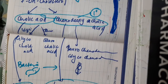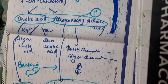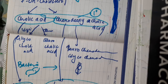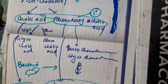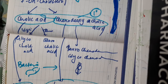Chenodeoxycholic acid combines with glycine to form glycochenodeoxycholic acid, whereas it combines with taurine to form taurochenodeoxycholic acid. So this is about the degradation of cholesterol. Thank you for watching.